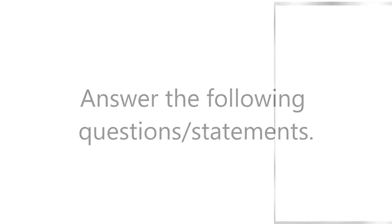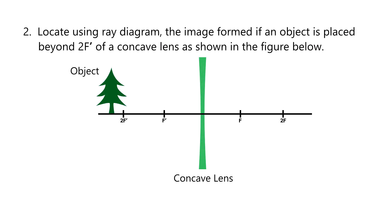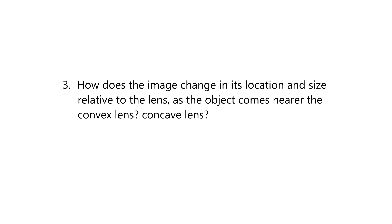To check your learning in this lesson, please answer the following questions. Number one: an object is placed at 2F prime of a convex lens. Where is the image located? What kind of image is formed? Number two: locate using a ray diagram the image formed if an object is placed beyond 2F prime of a concave lens. Number three: how does the image change in its location and size relative to the lens as the object comes nearer the convex lens or the concave lens?